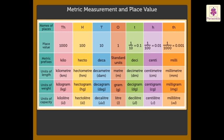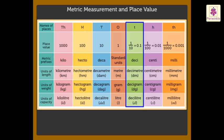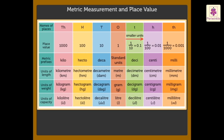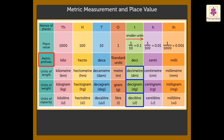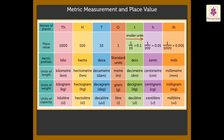Now let's move to the right of the ones column. The units in the tenths column are ten times smaller than, or one-tenth of, the standard units. We name these as decimeter, decigram, and deciliter, as the prefix deci means one-tenth.